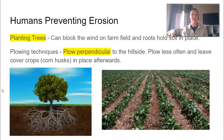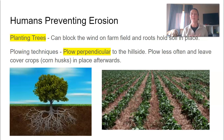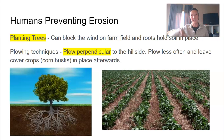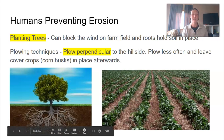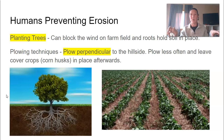Now humans can prevent erosion a couple of different ways. One of the ways we talked about in our very first reading was by planting trees. Farmers can actually plant trees around their farm fields to help prevent the wind from coming in — it kind of acts as a wind block. Also, these roots help hold the soil in place. When these roots grow, they actually hold on to the dirt so it's not going anywhere.